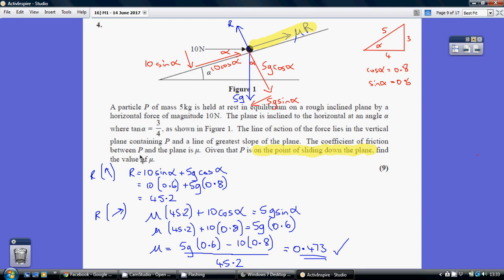So my only force going upwards perpendicular to the plane is my normal reaction. And my two forces going downwards perpendicular to the plane are this 5G cos alpha and this 10 sin alpha. So R equals 10 sin alpha plus 5G cos alpha. This one and this one.